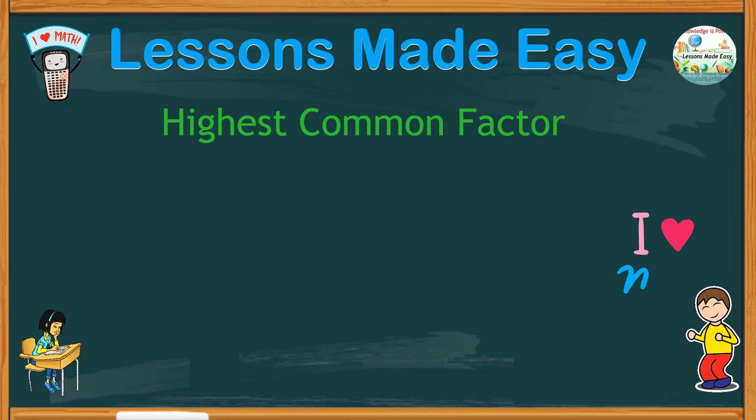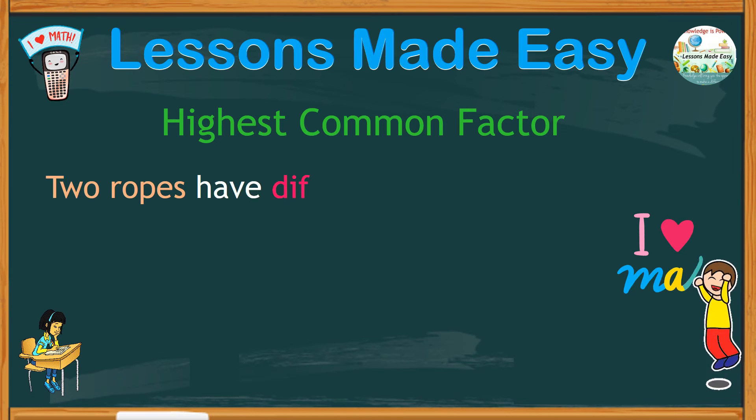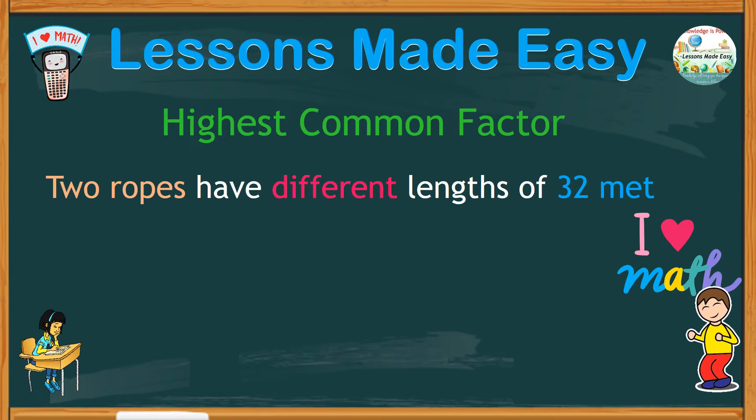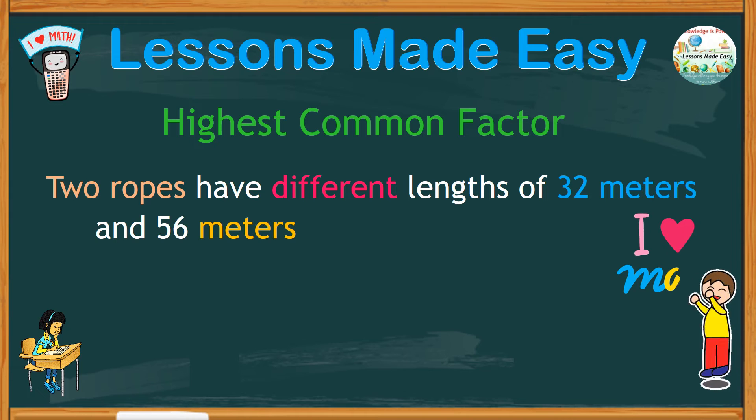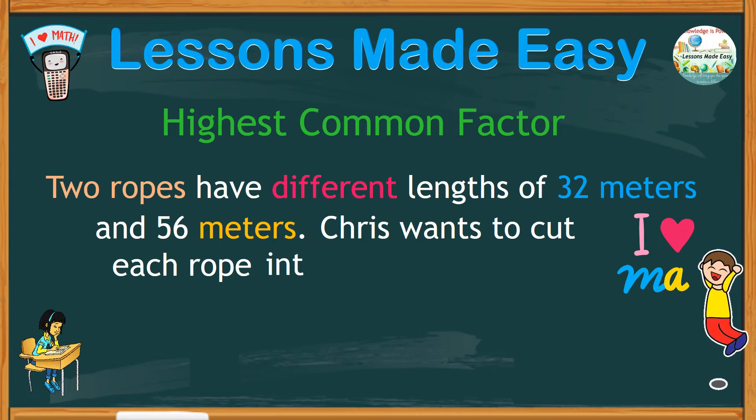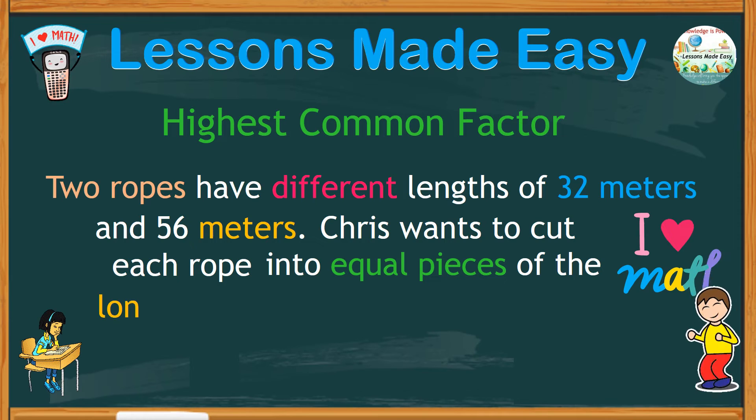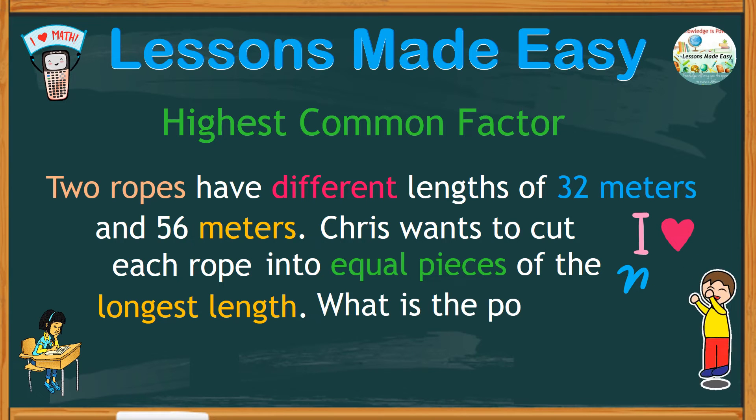The problem goes like this. Two ropes have different lengths of 32 meters and 56 meters. Chris wants to cut each rope into equal pieces of the longest length. What is the possible length of each piece of rope?